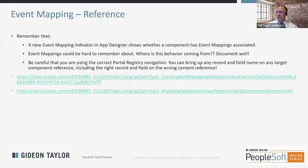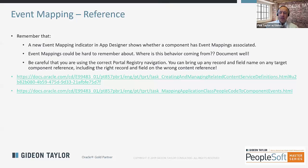So just to wrap things up — things to remember: you do have an indicator in App Designer that shows whether a component has event mappings associated with it. That's important because you always want to make sure you document like crazy, because event mapping is probably the last place another developer is going to look to figure out what's happening. It's hard to find event mapping in App Designer, so document very well and preferably do this as part of an overall initiative to isolate your customizations rather than a one-off solution.